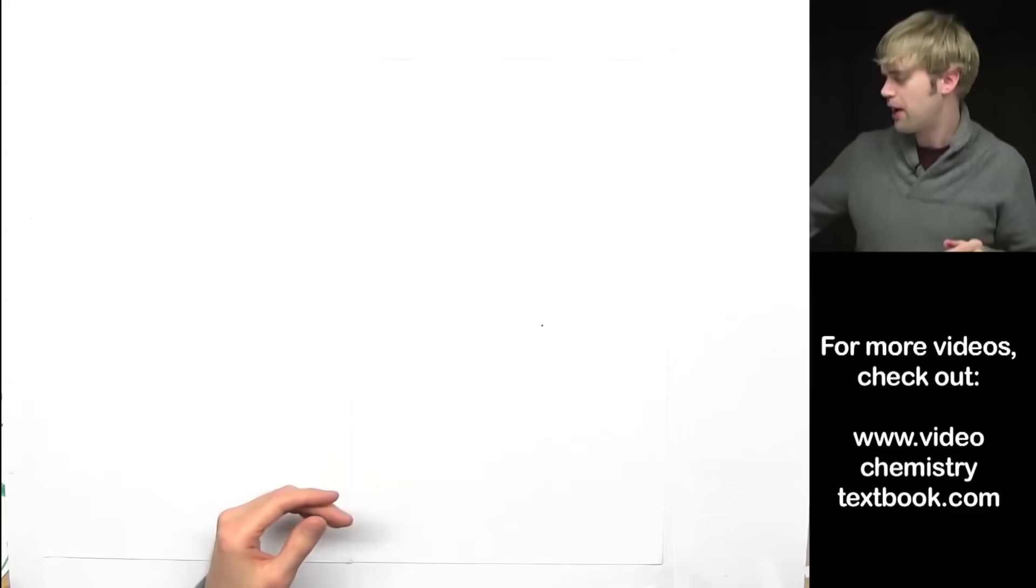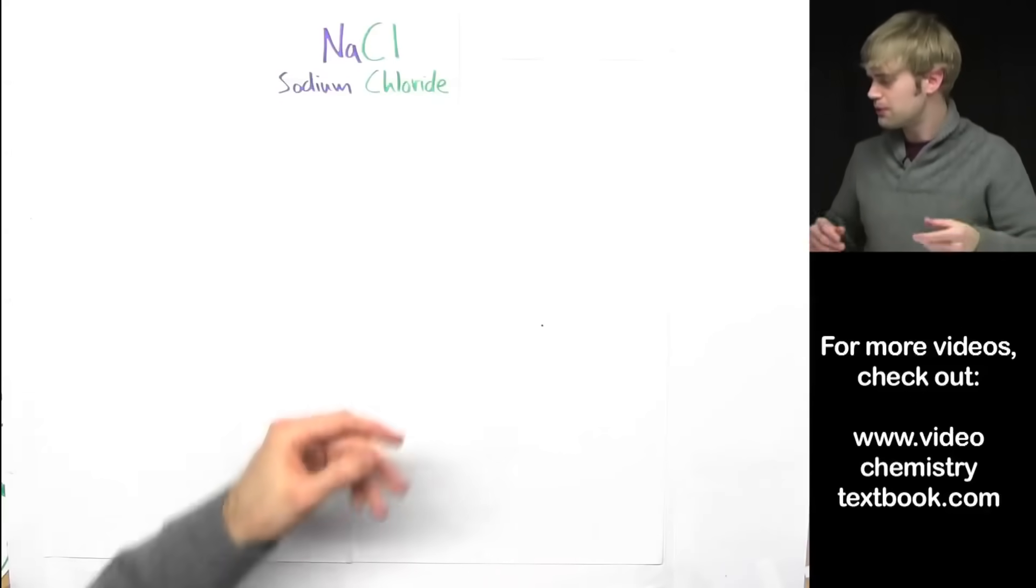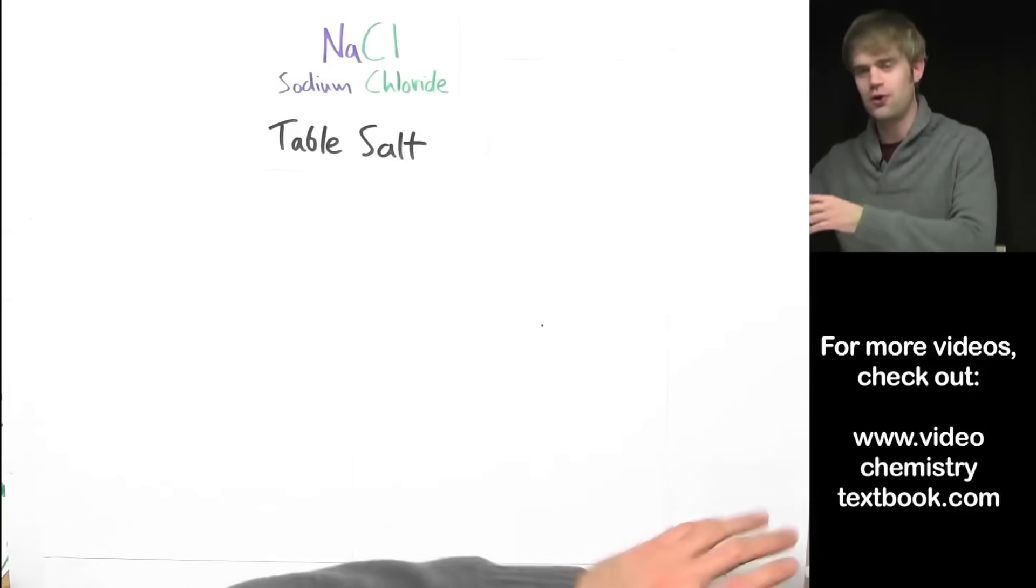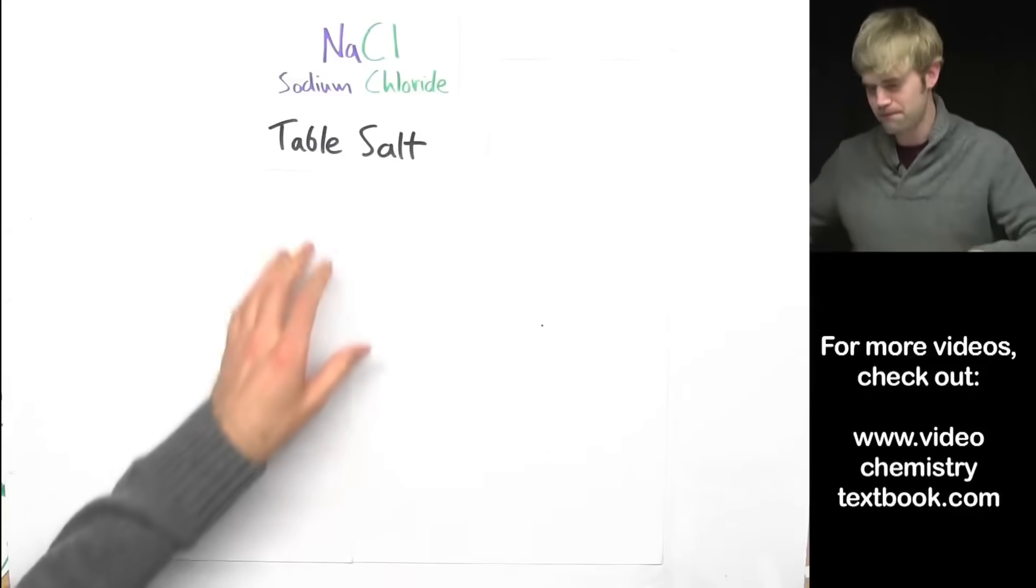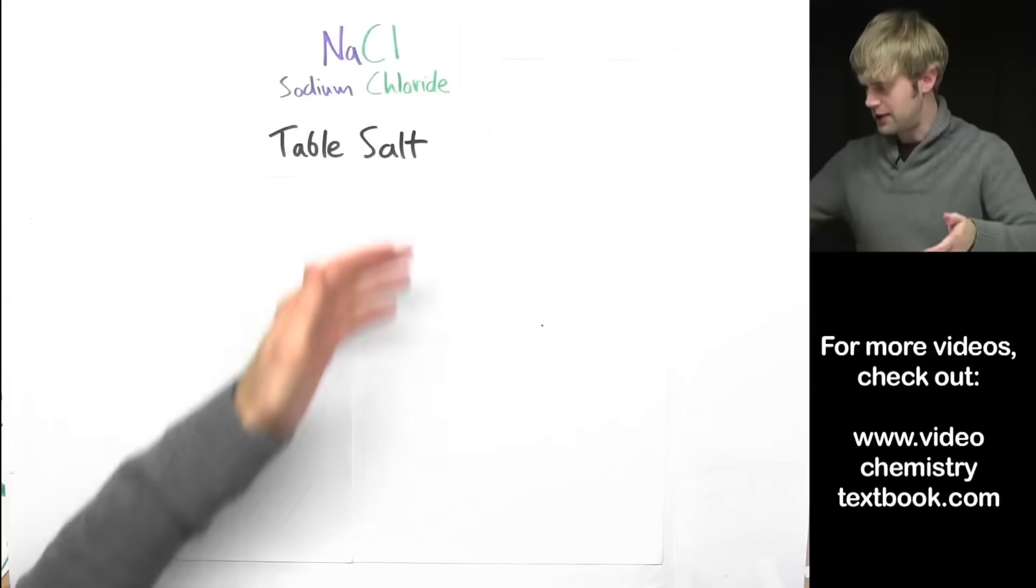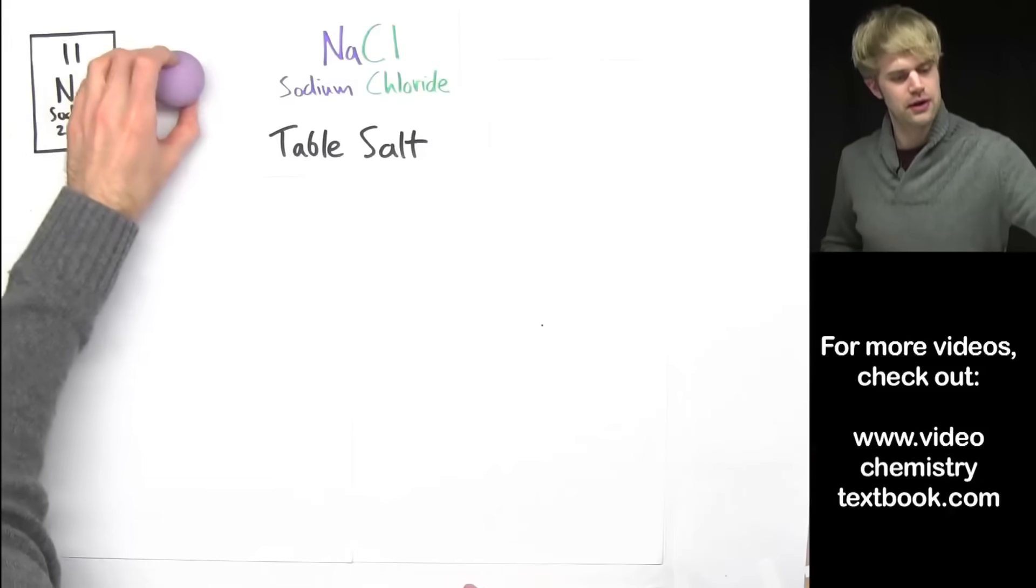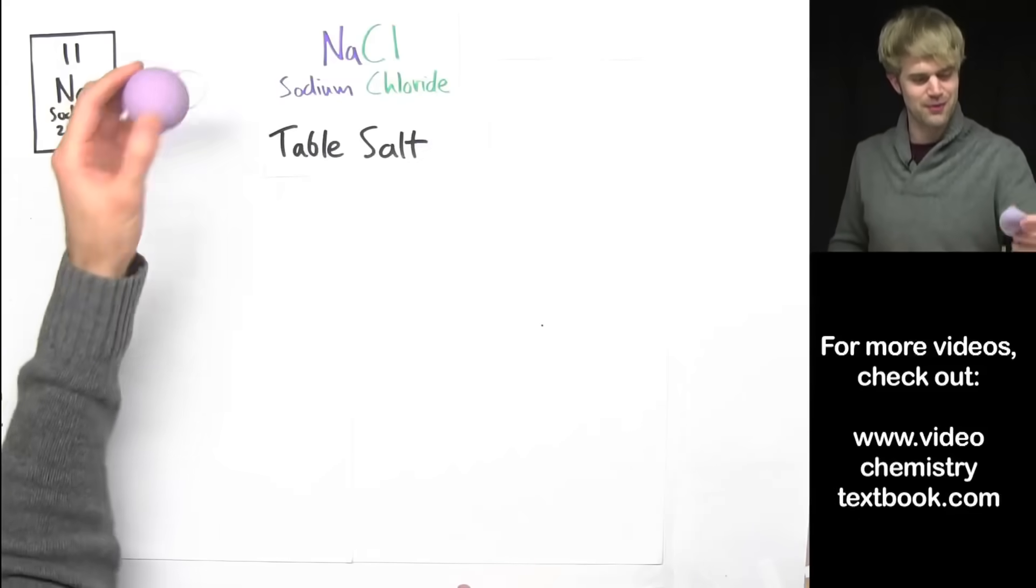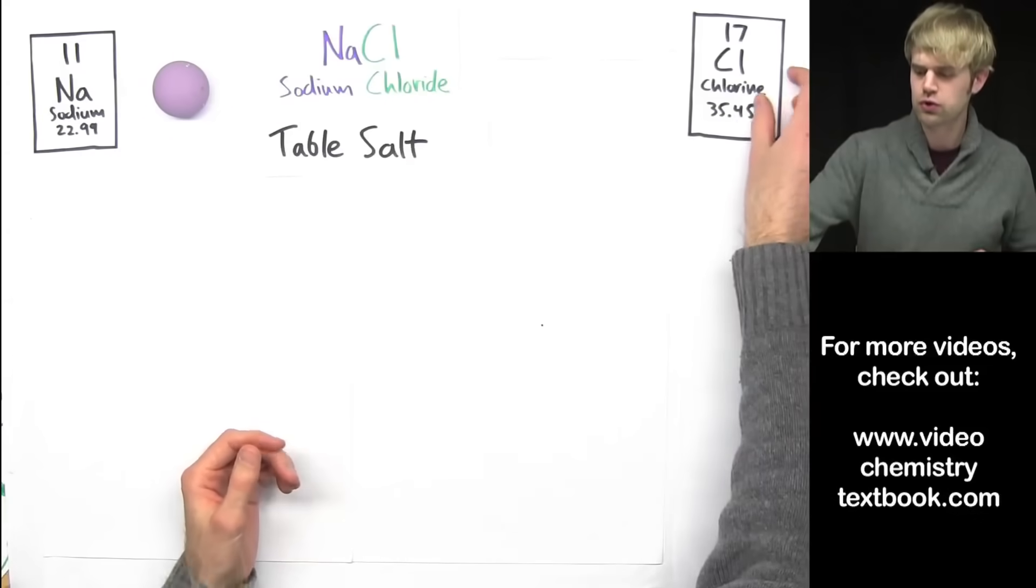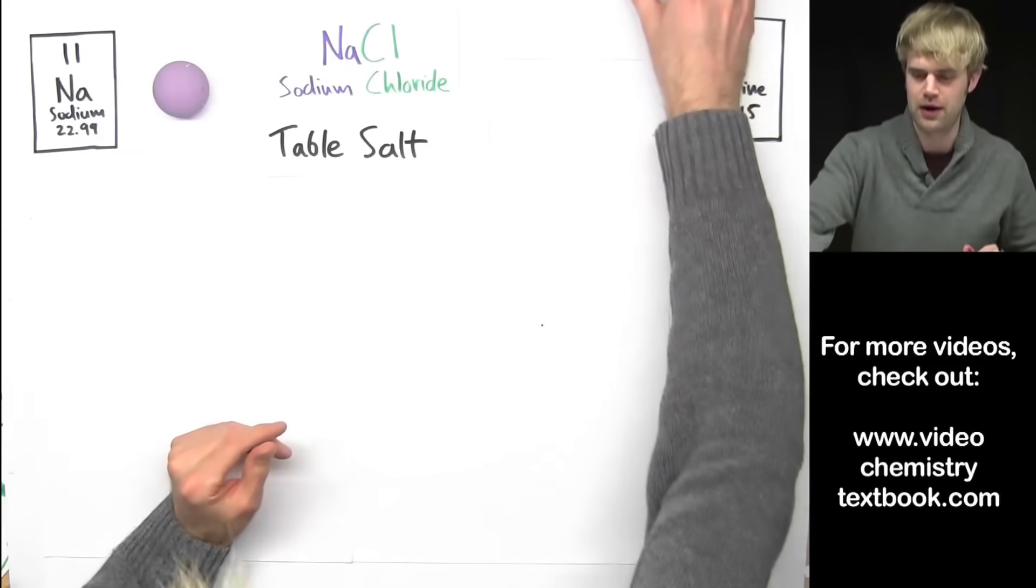To learn more about ionic bonds, we are going to focus on a chemical called sodium chloride. Sodium chloride is a fancy scientific name for table salt, it's the stuff that you put on your food. So sodium chloride is made of two types of atoms. We got sodium, here's its symbol from the periodic table and here is a sodium atom right here. And sodium chloride is also made of chlorine or chloride, I'll tell you what the difference between those is in a minute but you don't have to worry about it right now.